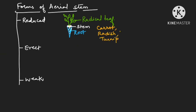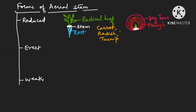Reduced stem is also present in the onion. Check carefully — this is the onion in which the reduced discoid stem is there, and the central bud is present. This central bud is surrounded by leafy sheaths — these are the leaf bases which store food. These are fleshy leaf bases which store food, and this is your reduced discoid stem, covered by a dry tunic.